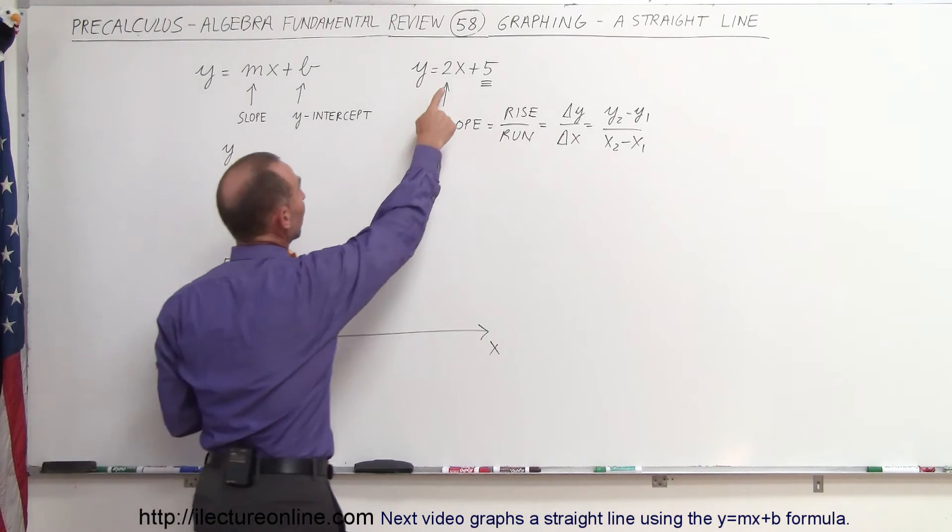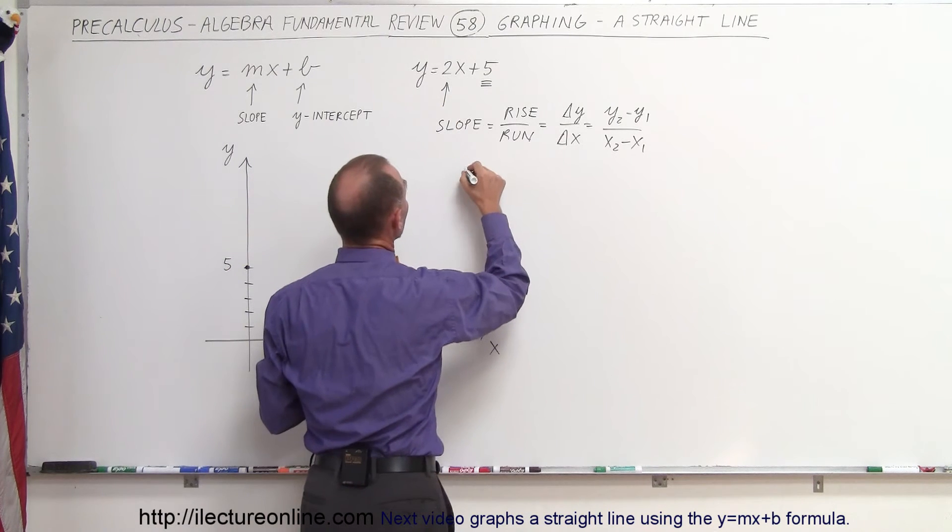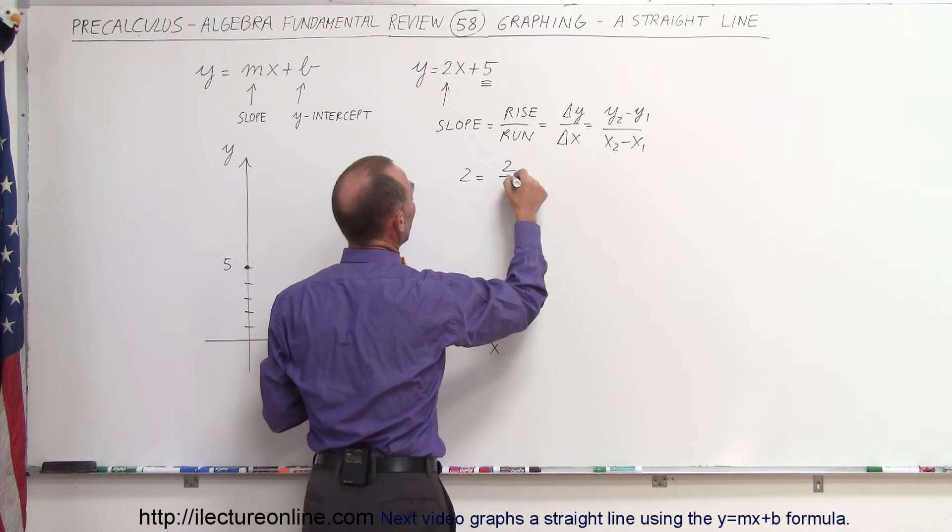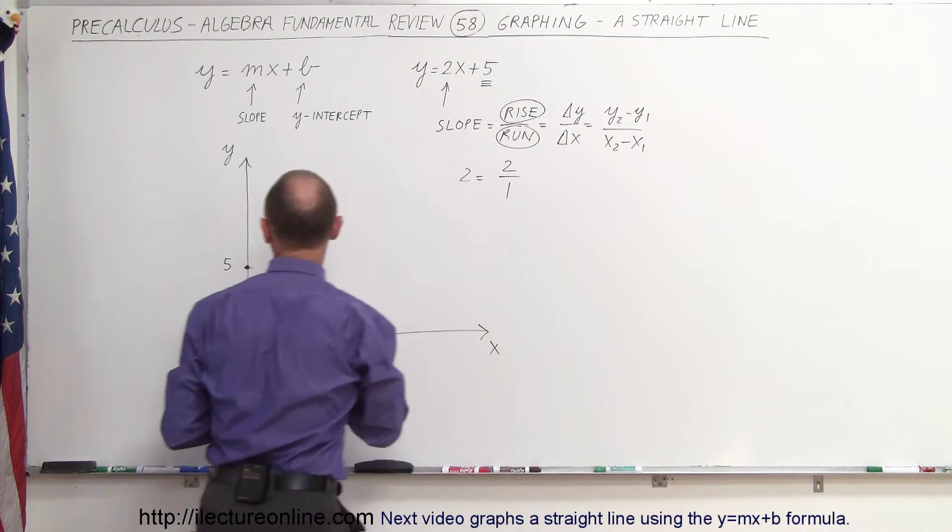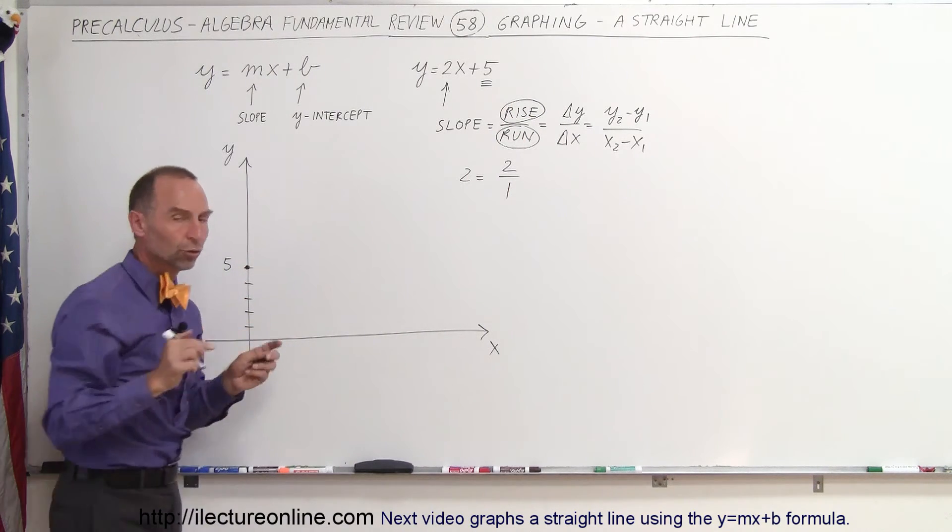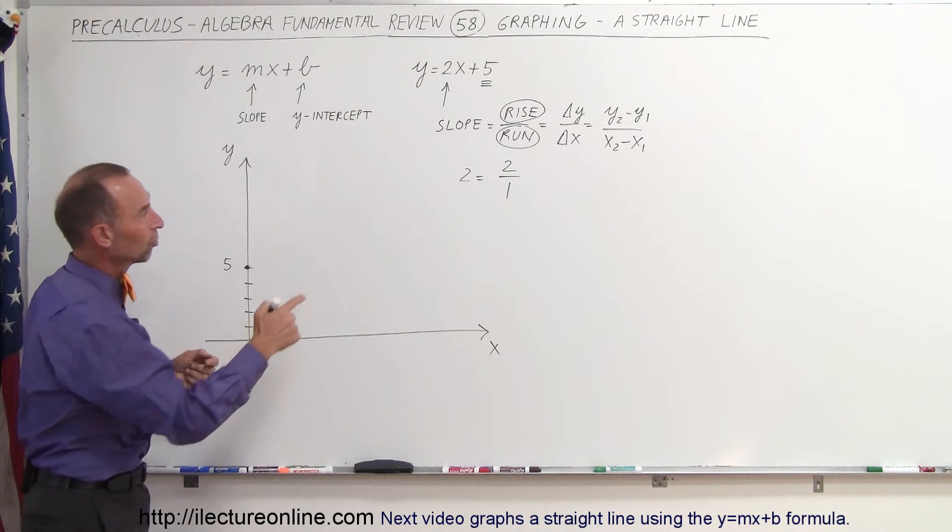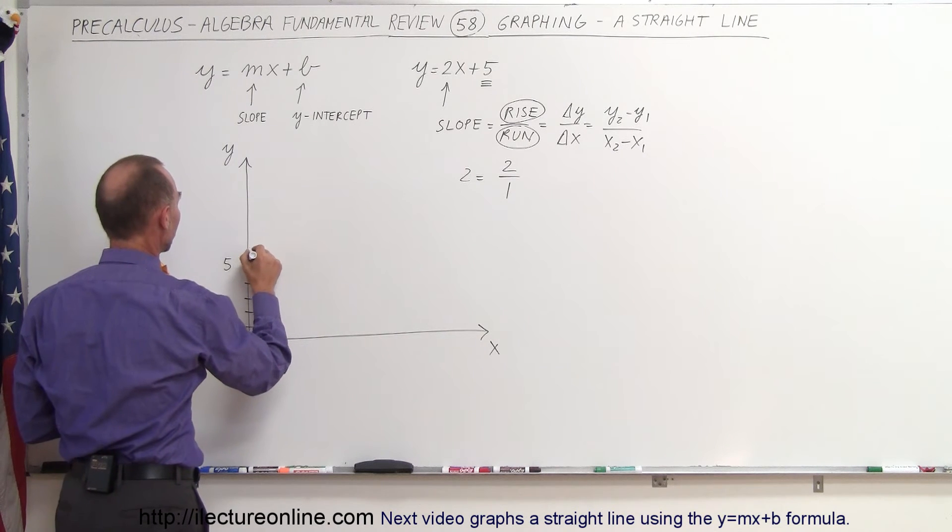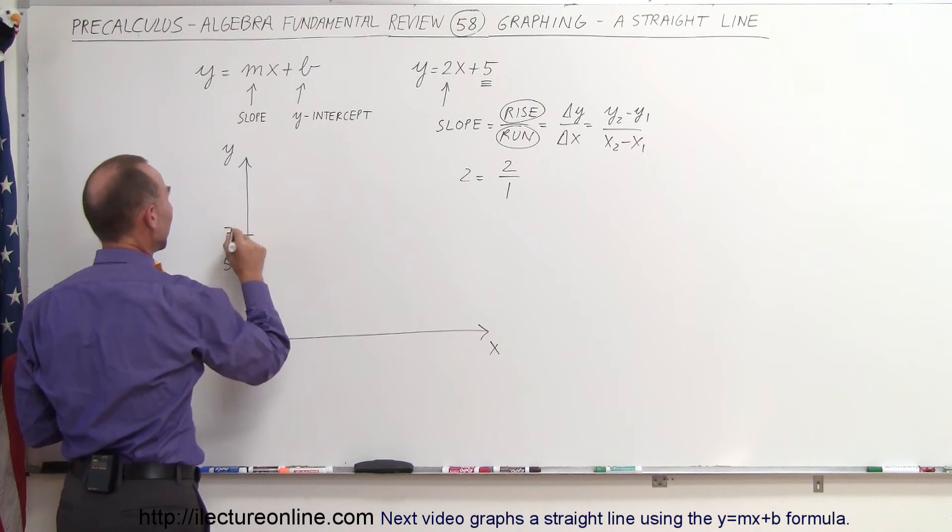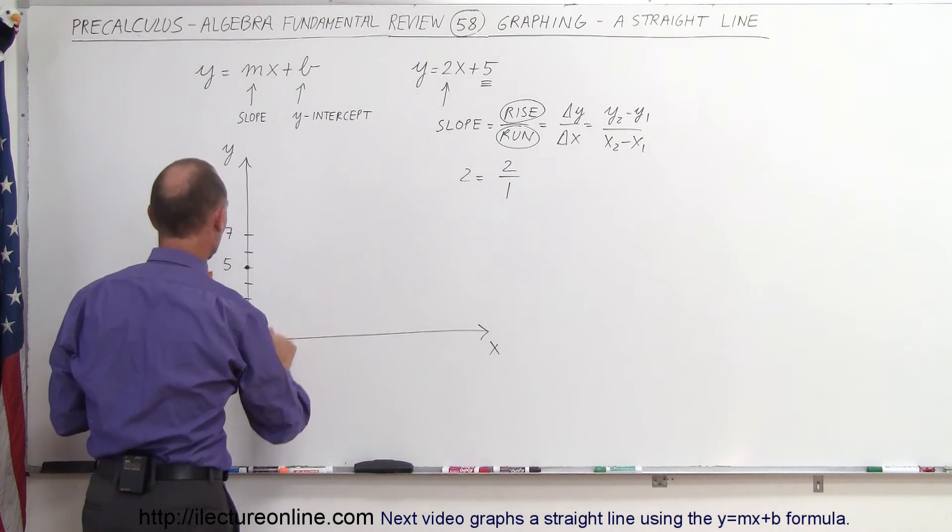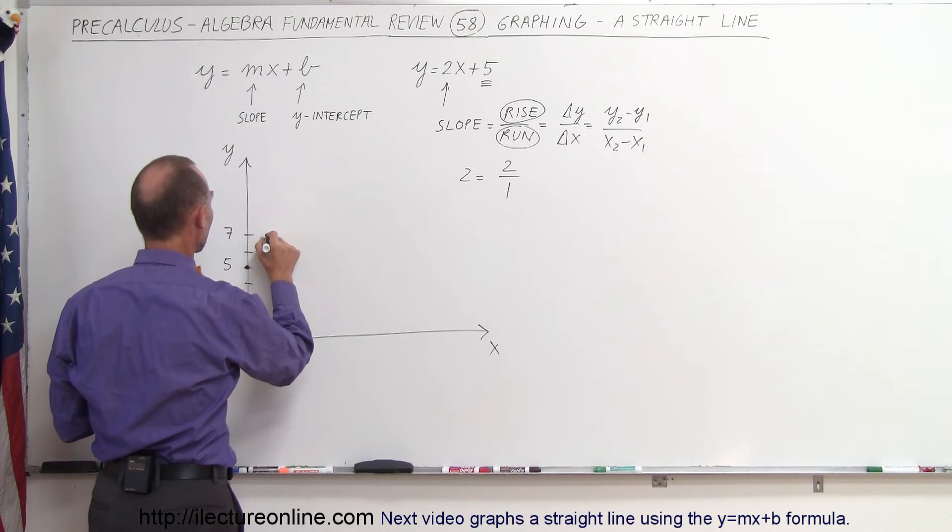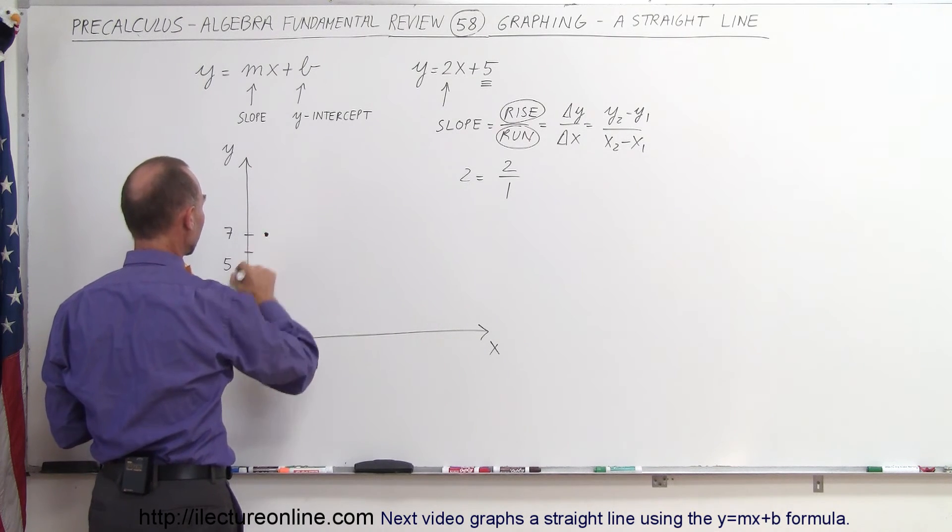So it tells me here that if the slope is equal to 2, that's equal to 2 divided by 1, which means the rise is 2 and the run is 1. So starting from the y-intercept, we're going to rise two units. So rise two units brings us from 5 to 6 to 7, and then we're going to run 1 unit—we go to the right by 1 unit, to 1 right there—and we draw another point and connect those two points. That gives us the line.